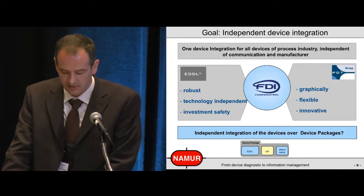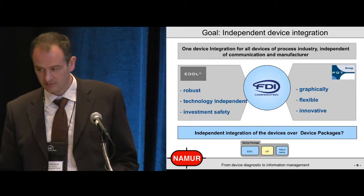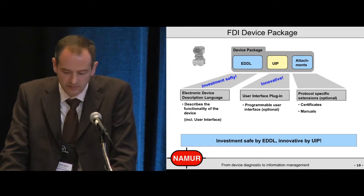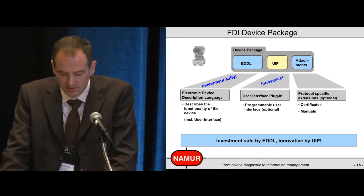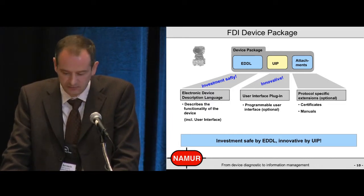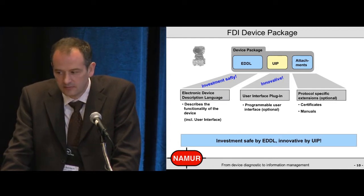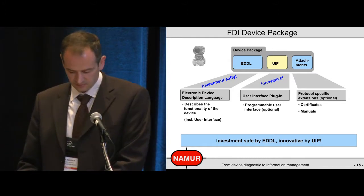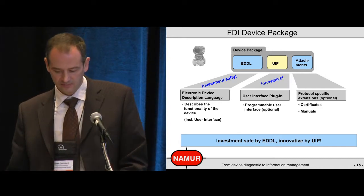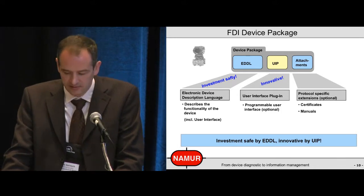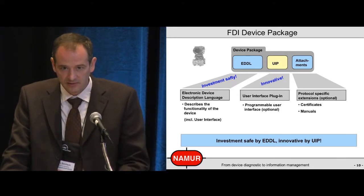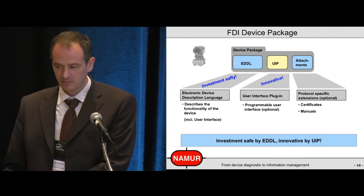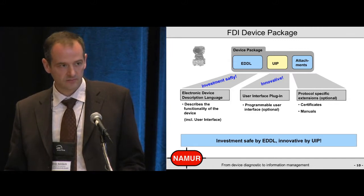This device package contains everything that is needed to configure a device. It's divided in three parts. It's an EDDL part that stands for investment safety and describes the complete functionality of the device including a small user interface. The second part is the UIP, user interface plugin — this is fully programmable; you can do all the graphics you want and it's very flexible. The third part is attachments where you can bring in certificates and also manuals to use the device. Then you have one package that contains really everything needed to use the device, reaching investment safety by EDDL and innovation by the UIP.